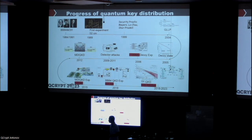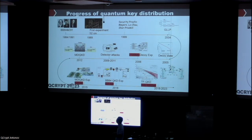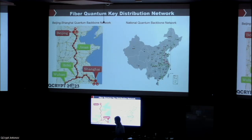The first experiment was in 1989, with a distance of about 32 centimeters. After that, lots of scientists and engineers expanded the distance between transmitter and receiver. After about 20 years the distance exceeded 100 kilometers. Now with new protocols — MDI and TF-QKD — the distance is extended to 1,000 kilometers. This is a new record in the fiber channel, and the field is maturing, with many companies showing products.